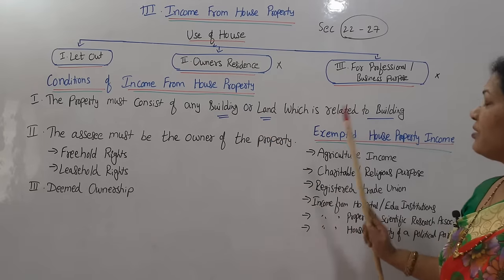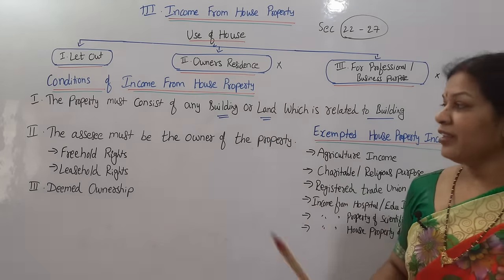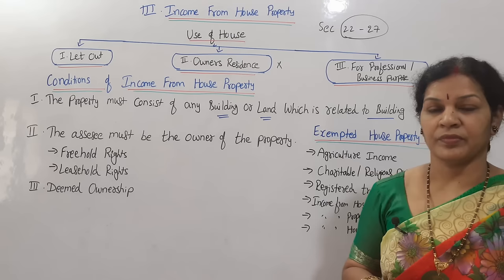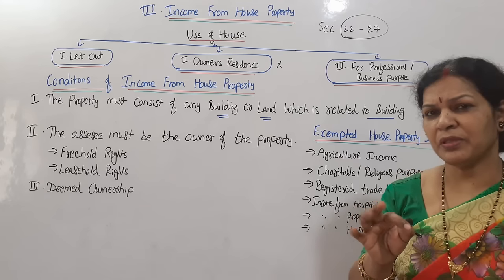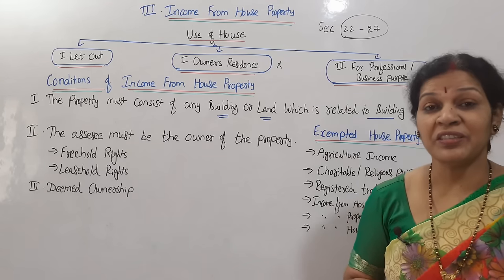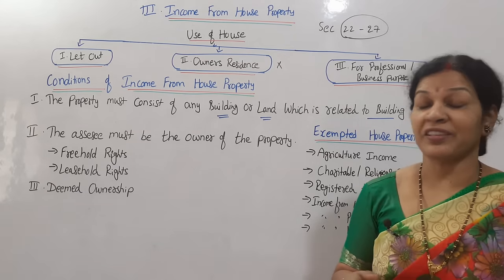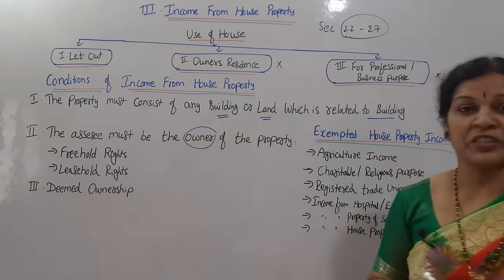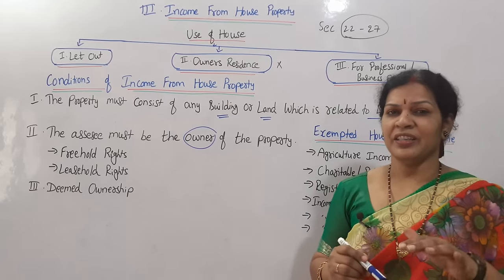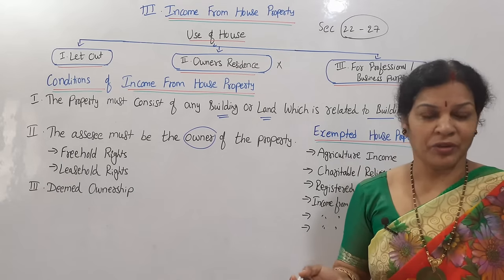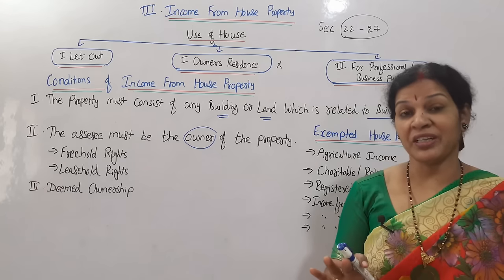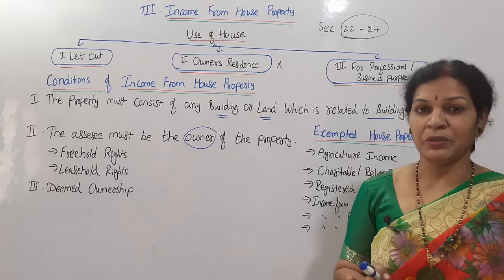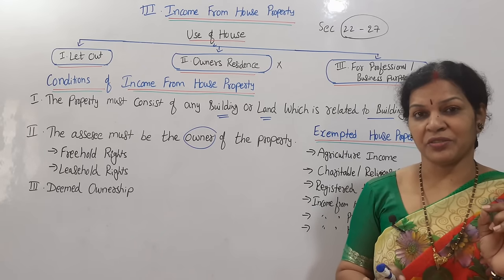The second condition is that the assessee must be the owner of the property. The assessee — the person who has to pay the tax — must be the owner of the property. If he is not the owner, then whatever income he is getting, we do not consider it as income from house property.